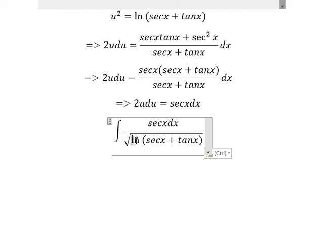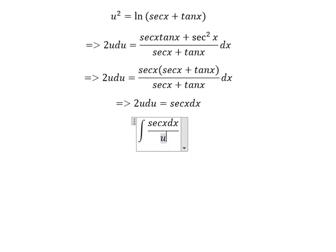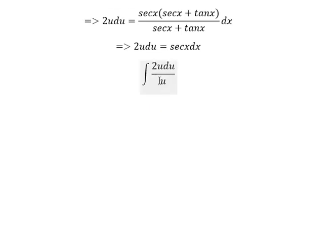We change this one for u here. Sec x dx we change for 2u du. Next, u divided by u, now you get only 2 multiplied with the integral of du.